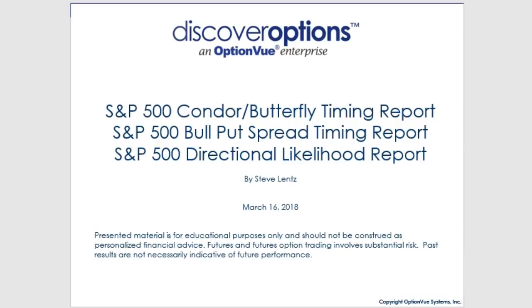Hello folks, Steve Lentz here with Discover Options at OptionView Systems. Welcome to this edition of three different S&P 500 market timing reports for advanced options traders. This will be for Friday ending on March 16th, getting ready for Monday on March 19th.